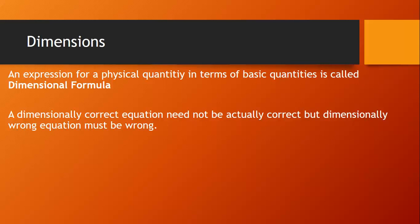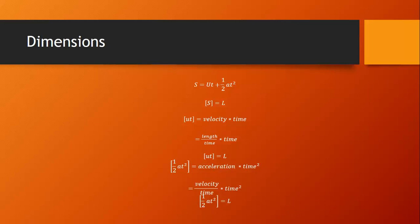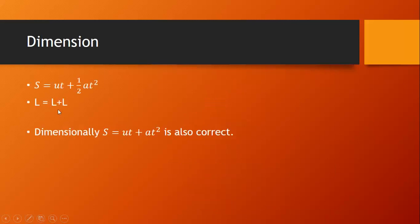Let me give an example. I have taken the physical relation s equals ut plus half u t squared. I want to check whether this relation is dimensionally correct or not. To check this, I have to write the dimensional formula for each and every term in this relation. The dimensional formula for s is L. The dimensional formula for ut is also L. And the dimensional formula for half u t squared also gives L. So the dimensional formula for every term in the relation is the same. Therefore, the physical relation s equals ut plus half at squared is dimensionally correct. Here, half is a numerical factor — it is dimensionless — so dimensionally s equals ut plus at squared is also correct.